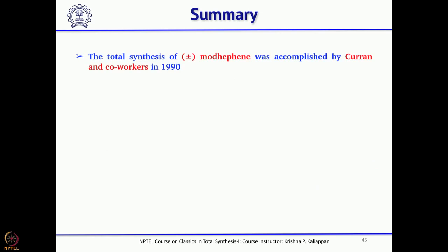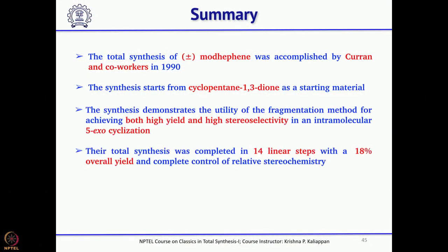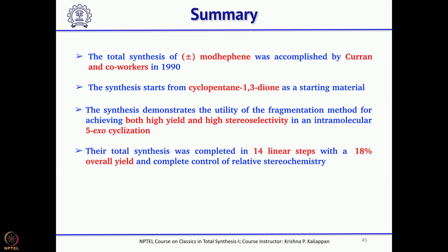Curran successfully used not tandem but two sequential radical cyclizations to form two five-membered rings, starting with one five-membered ring from cyclopentane-1,3-dione. He also used an intermediate cyclic vinyl stannane in the synthesis. Overall, the synthesis took about 14 steps with an 18 percent overall yield and complete control of stereochemistry — one of the key aspects of Curran's total synthesis of modhephane. Though it is a racemic synthesis, it is considered a classical synthesis of triquinanes. With this, the discussion on triquinane synthesis will continue in the next class.